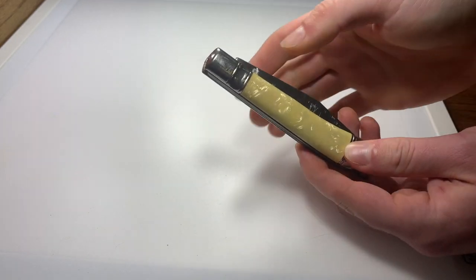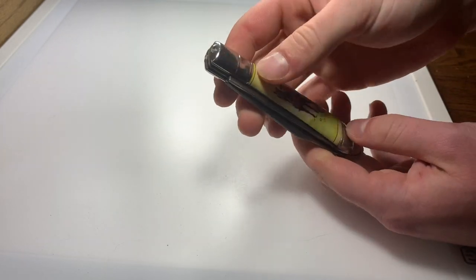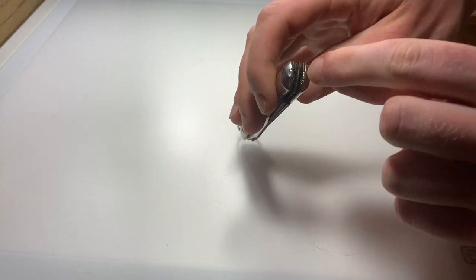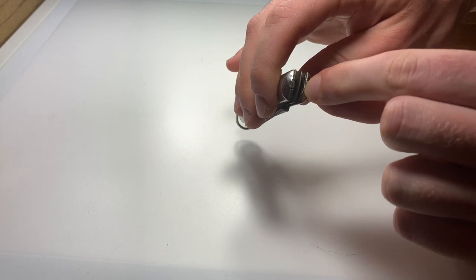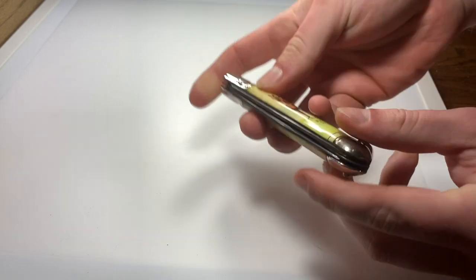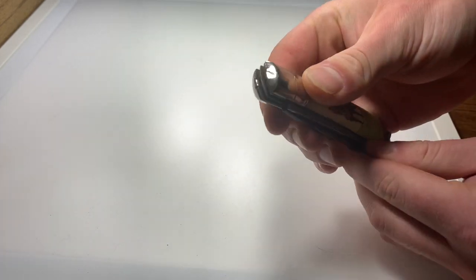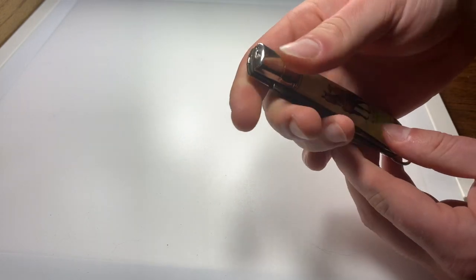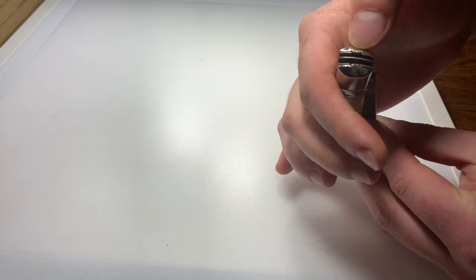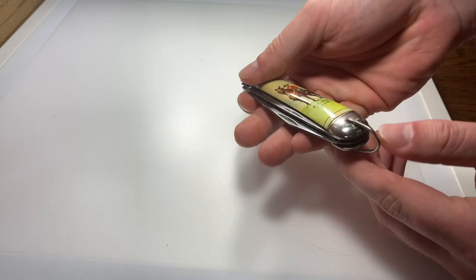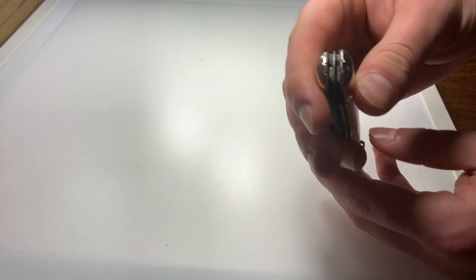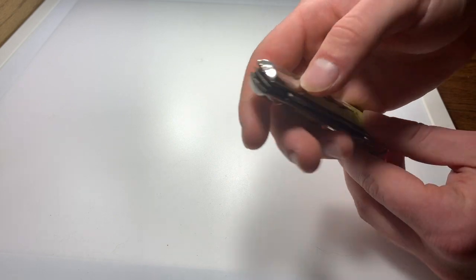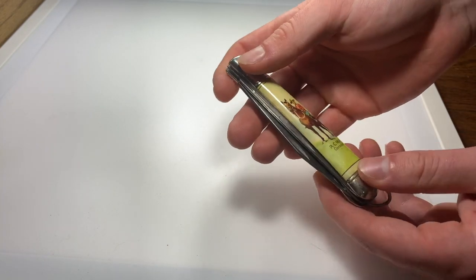Yep so here we've got these shell scales. They're crimped down on the top and on the bottom and actually one of them was extremely loose. Let's see it was this side. This side was very loose because the crimping had kind of come out a little bit so I just took a pair of needle nose pliers and re-crimped it and now it's pretty tight again.